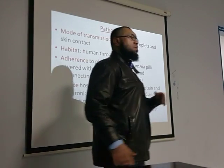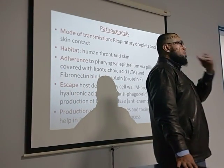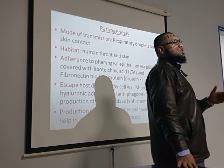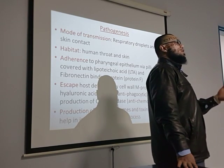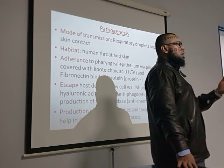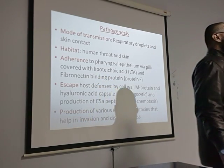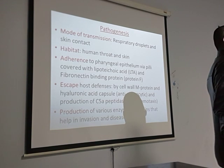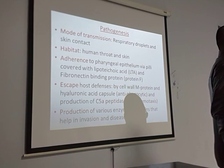Streptococcus pyogenes is primarily part of the upper respiratory tract, causing upper respiratory tract infections, and is also present on the skin. From there it spreads to the bloodstream and reaches the heart, attaching to the valves using cell wall lipoteichoic acid and fibronectin-binding protein. It evades the immune response using its hyaluronic acid capsule and Protein M, both of which are anti-phagocytic.